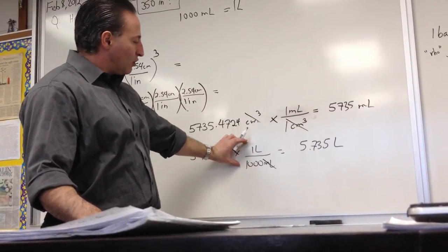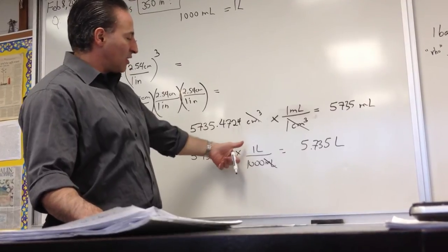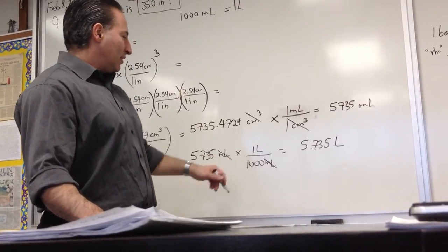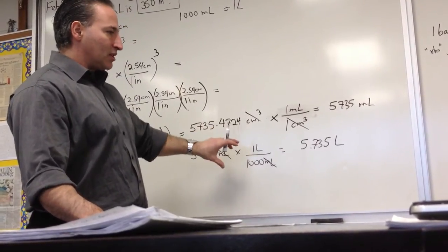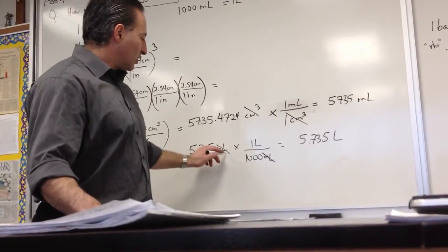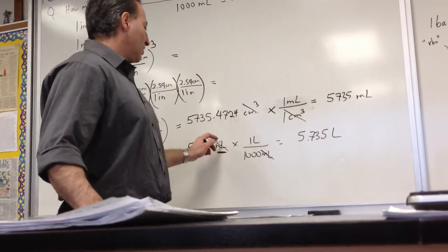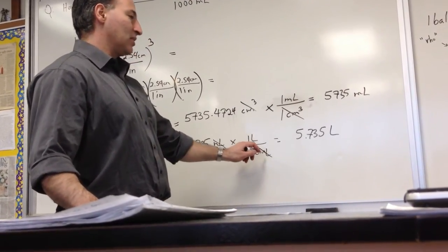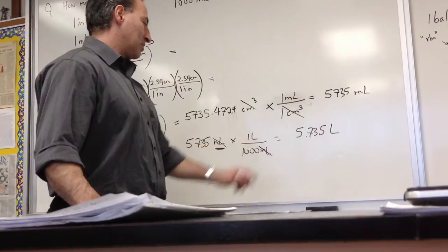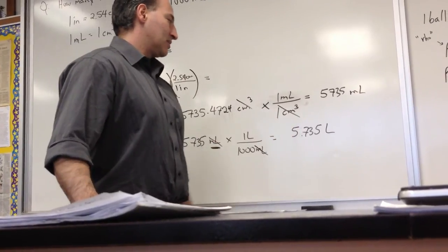How do I know how to write this conversion factor correctly? Do I write it like this, or do I write it upside down? The criterion I use to decide which unit to put on the bottom is to look at the one I'm trying to cancel. I'm trying to get rid of mLs and turn them into liters. So to cancel mLs, I need to put 1,000 mLs in the denominator. That allows me to cancel mLs, and I'll get an answer in liters.